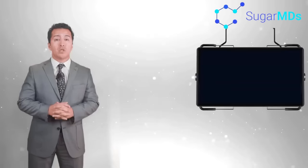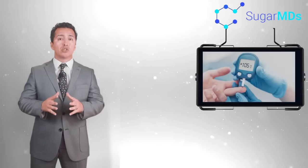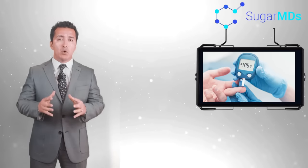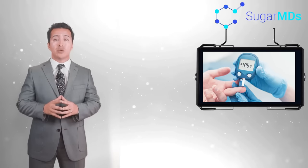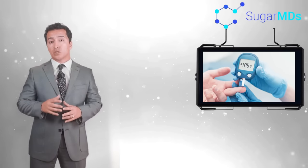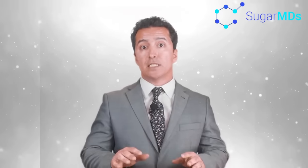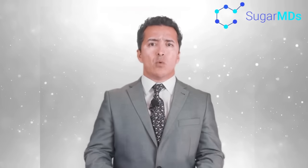Number one, know your numbers. Your blood sugar numbers are some of the most important numbers that you need to know in your life on par with your social security number and your online banking pin. Seriously, you're going to just keep resetting that. You're going to have to write it down somewhere eventually.